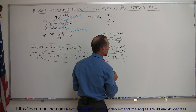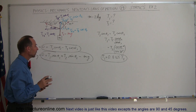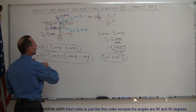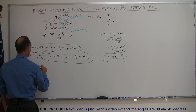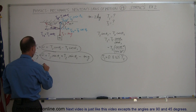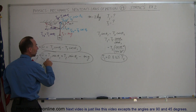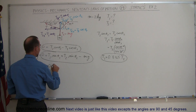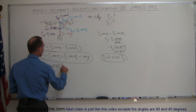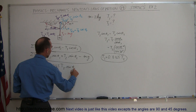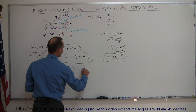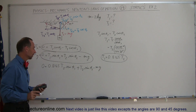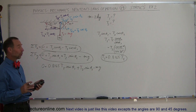Keeping a few extra significant figures to avoid roundoff error, we can now plug this into the second equation, replacing T1 to eliminate one of the two unknowns. So we have 0 equals 0.8165 T2 times the sine of theta 1, plus T2 times the sine of theta 2, minus mg. We now have an equation with just one unknown.